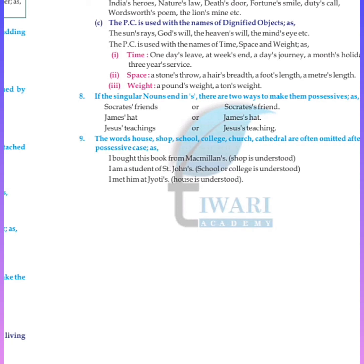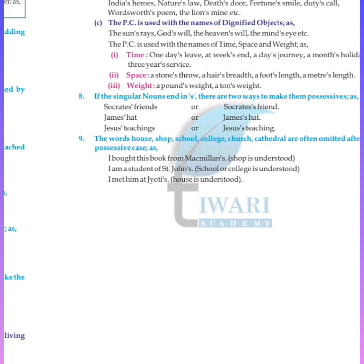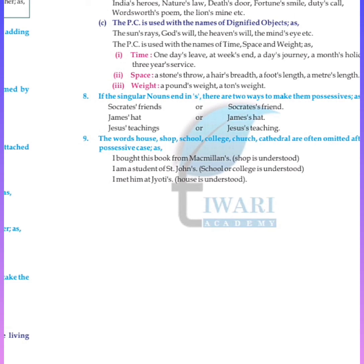When two nouns are in apposition, the possessive sign is put to the latter: this is Sachin the cricketer's bat, that is Tagore the poet's novel. When two nouns are closely connected, the possessive is put to the latter: Sam and Ram's bakery. The bride went to her father-in-law's house. The possessive case is chiefly used when the noun refers to living things: the elephant's trunk, the dog's tail, Santos's ring, boy's leg.